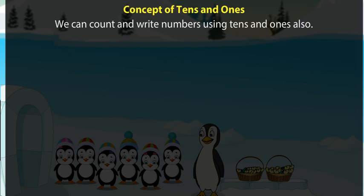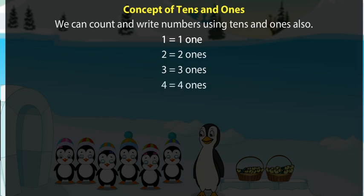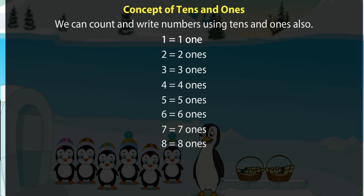We can count and write numbers using tens and ones also. One is equal to one one. Two is equal to two ones. Three is equal to three ones. Four is equal to four ones. Five is equal to five ones. Six is equal to six ones. Seven is equal to seven ones. Eight is equal to eight ones. Nine is equal to nine ones.